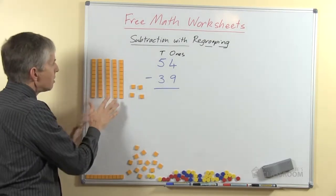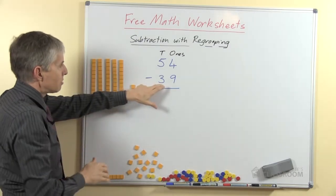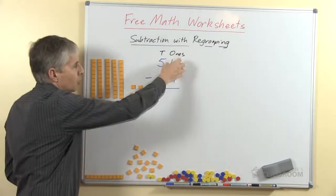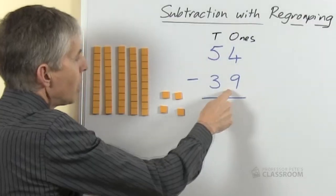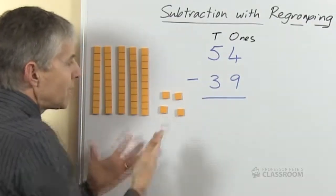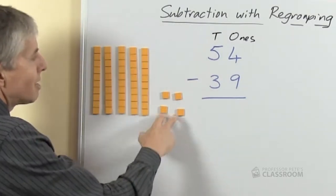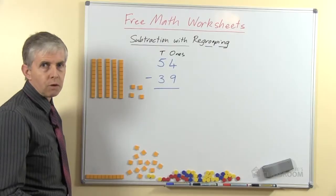Now if we're just looking at the blocks we could say, well I could take away 3 straight away because that's my 3 tens. But because of the way we do this in writing we always start with the ones place or the ones column. So we're going to take away 9, here are the ones, can we take 9 away? And of course the answer is no, because there are only 4 and 9 is bigger than 4.